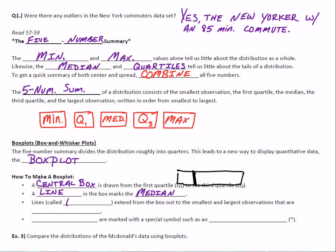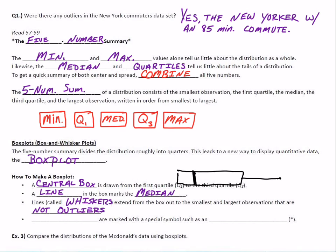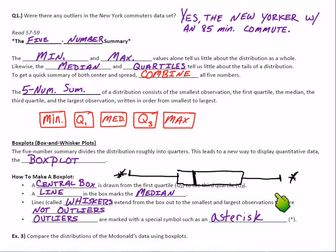Then we have lines called whiskers that extend from the box out to the smallest and largest observations that are not outliers — out to the biggest one that's not an outlier and out to the smallest one that's not an outlier. For the outliers, we save something special: we usually use asterisks. So if I have an outlier up here, I'd put an asterisk. To make a box plot, we need the five-number summary and then we need to pay special attention to where some outliers might be — we'll use asterisks for those.